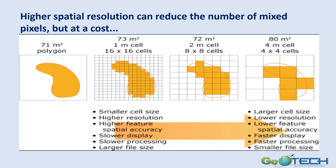Here's another example of spatial resolution. On the left, that 71-meter square polygon — maybe it's a pond, but we don't know. If we put it into a raster grid with a one-meter cell size, it still looks pretty much like a pond shape. But as we go to two-meter cells or a four-meter cell, it becomes almost impossible to identify exactly what it is. A smaller cell size is very good — it helps you identify the feature and gives you better spatial accuracy, but it may cause slower display, slower processing, and very large file sizes. A larger cell size with lower resolution gives you lower feature spatial accuracy, but it may display and process faster with a smaller file size. You really have to look at your application and decide what spatial resolution you need.